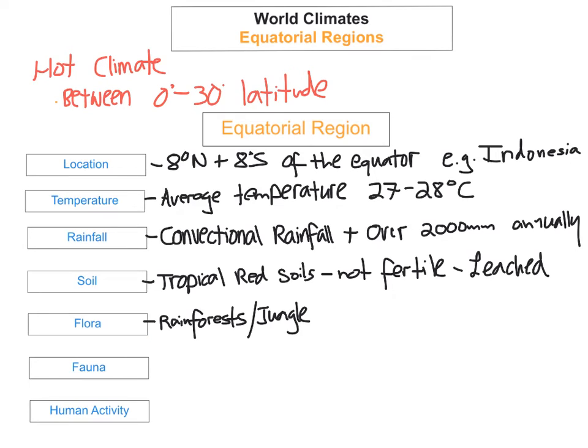So the fauna—the different animals and species—these include monkeys, snakes, parrots, and butterflies.